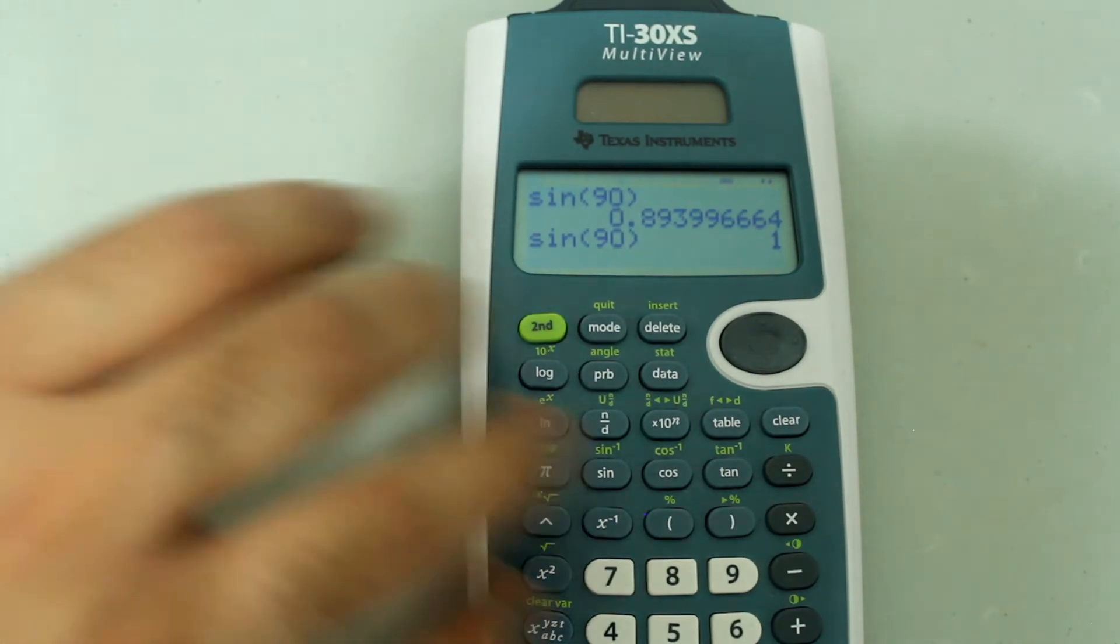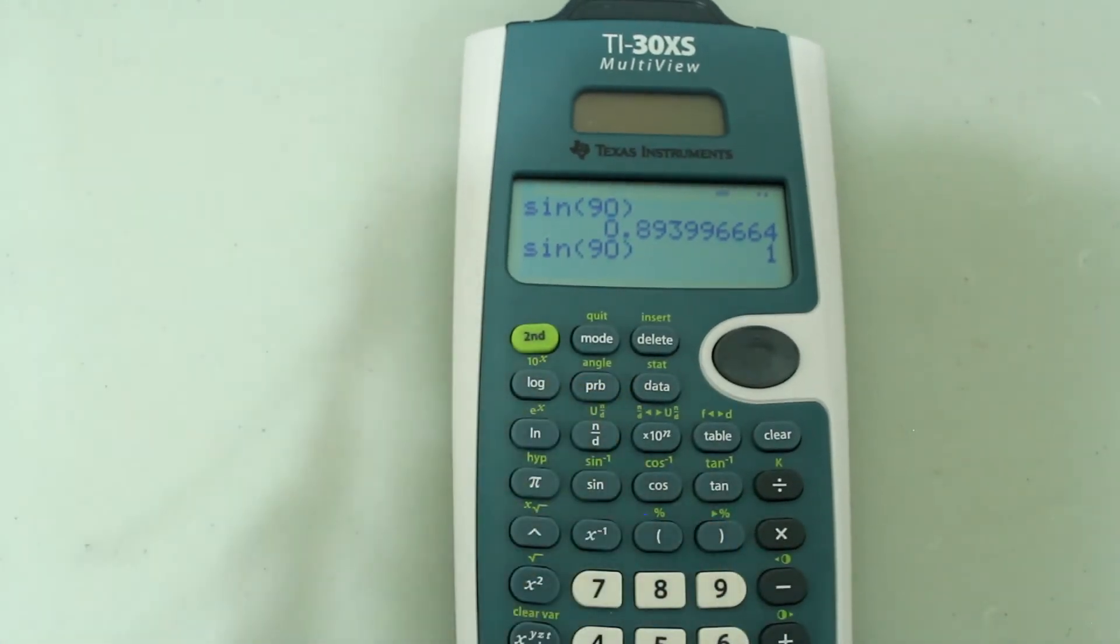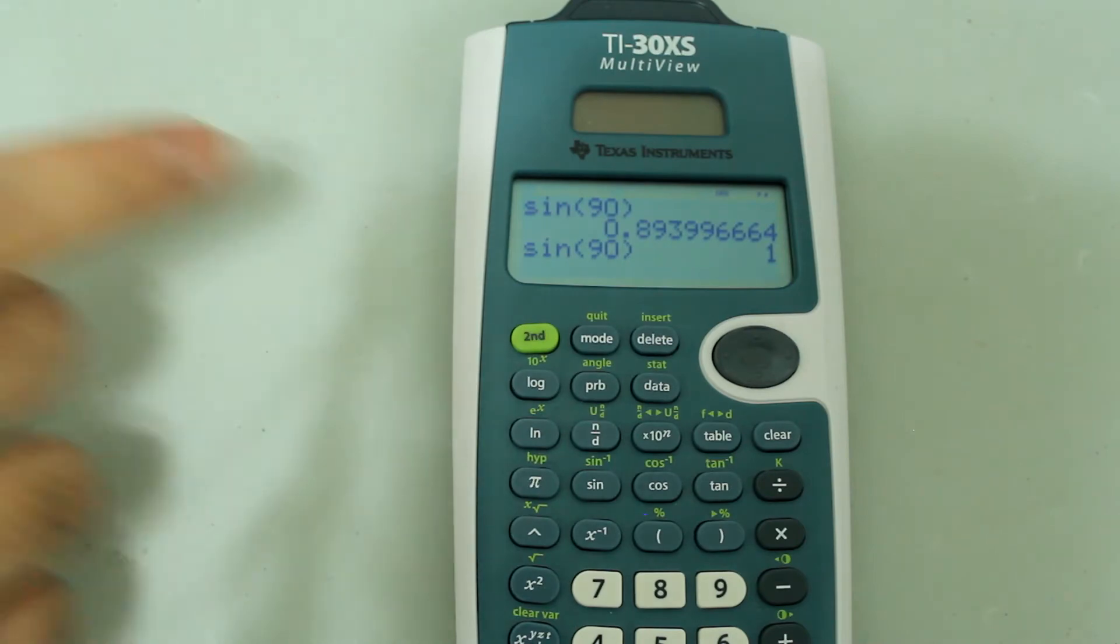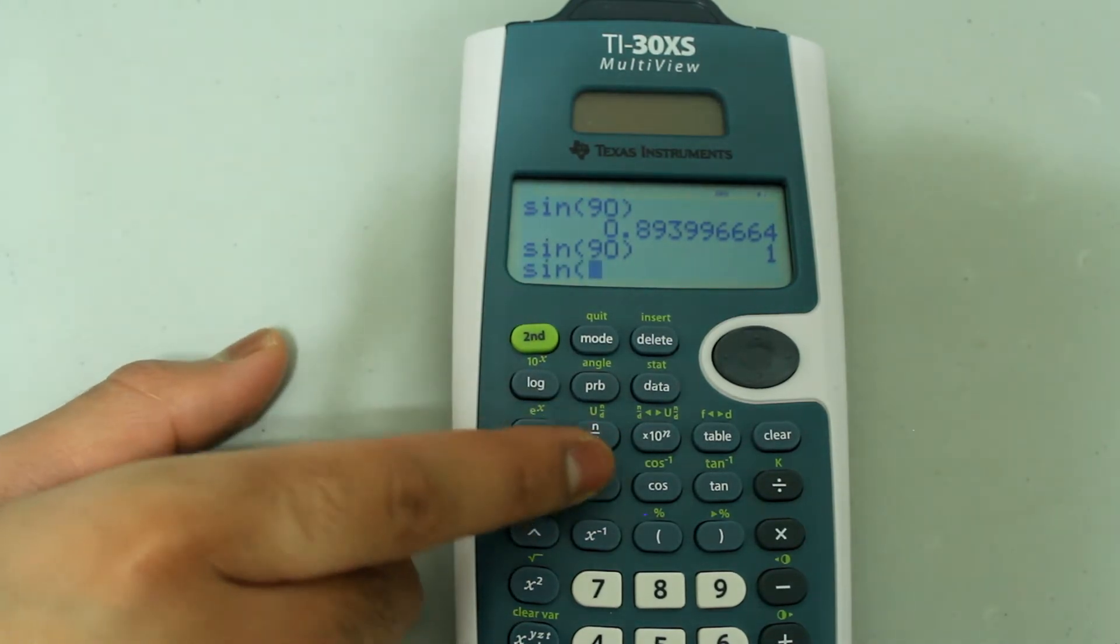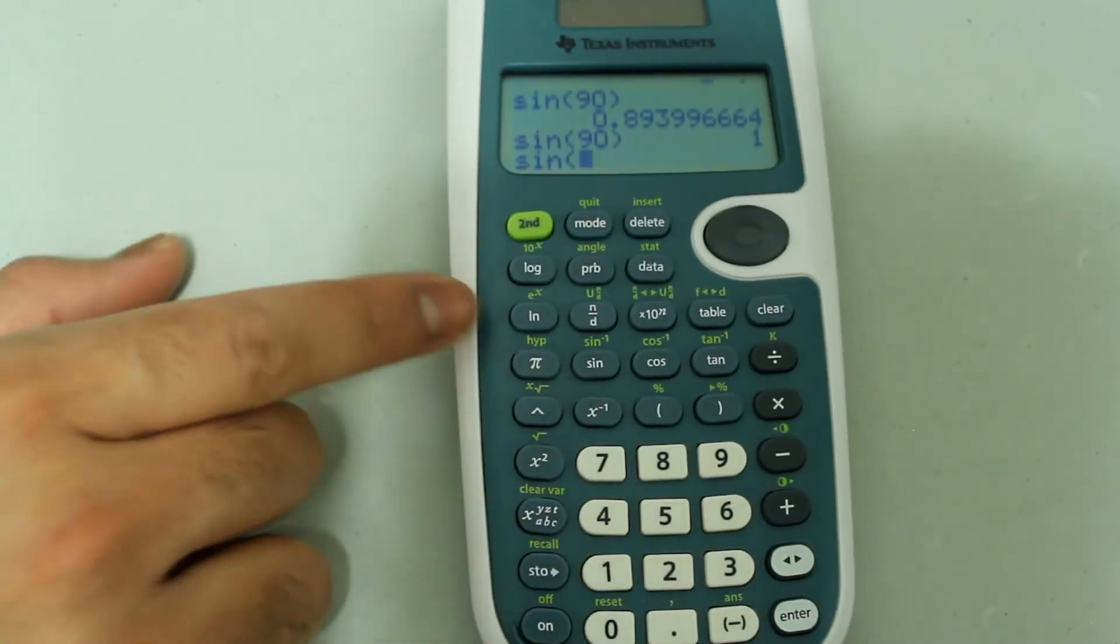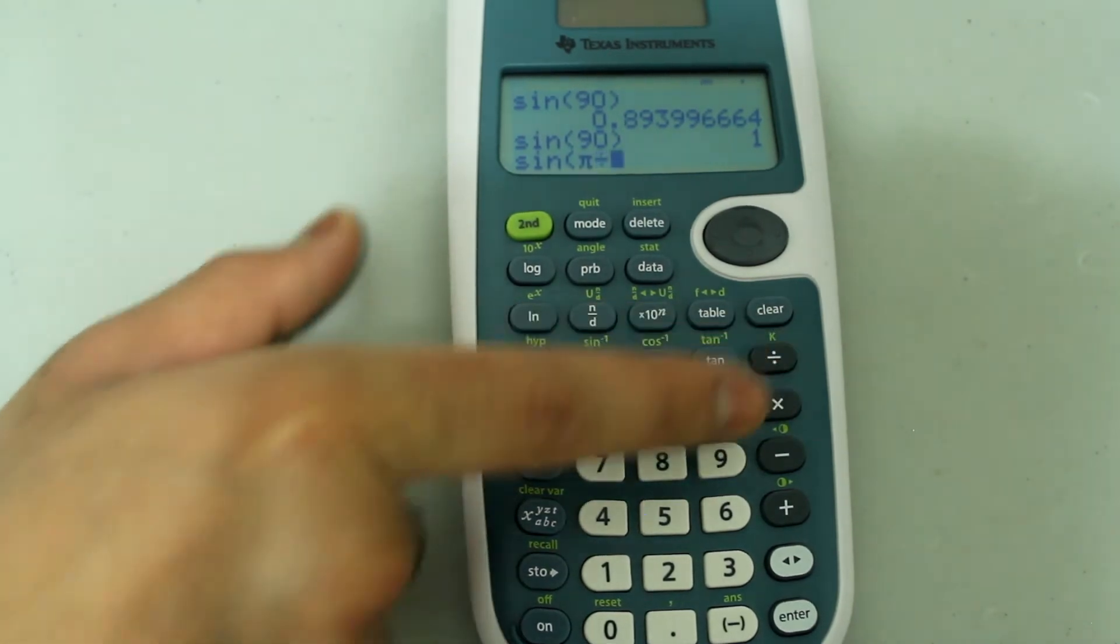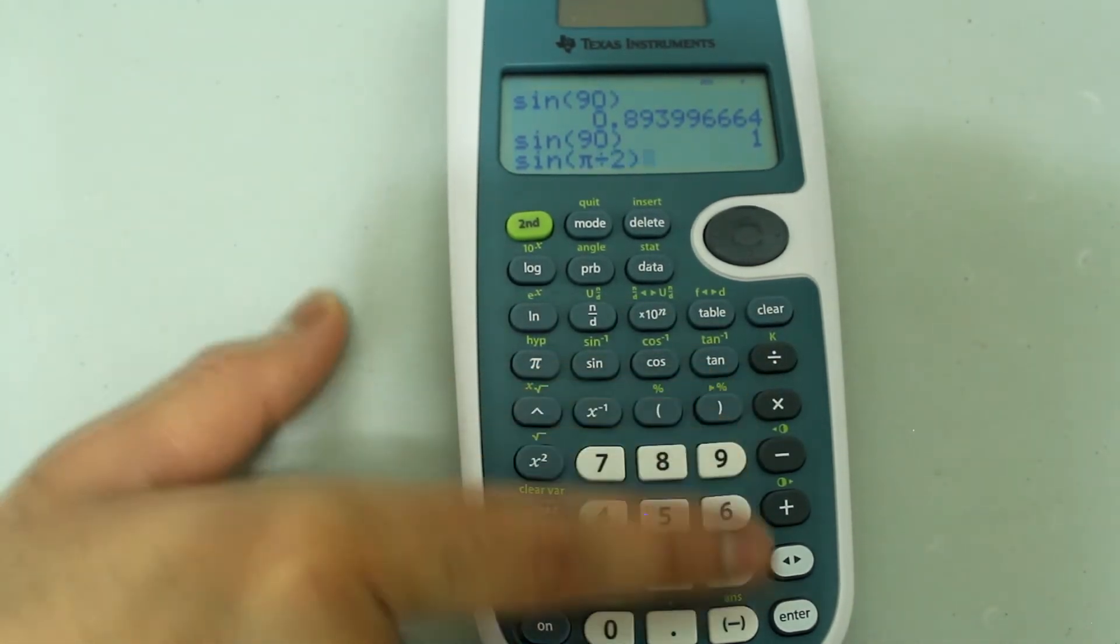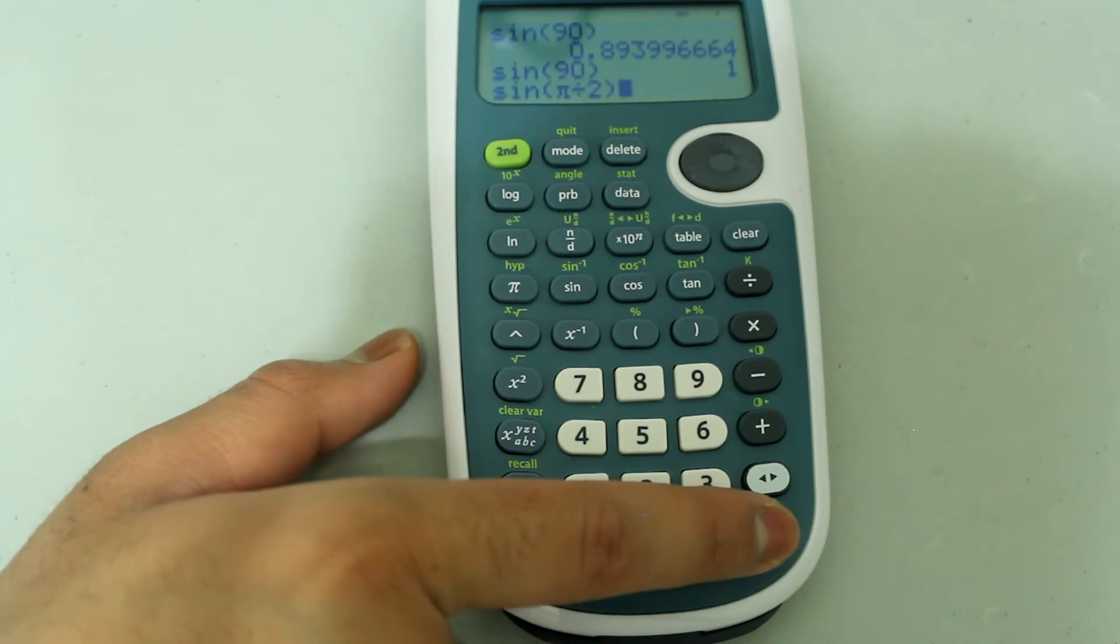A similar problem might occur if you're typing in an entry in radians while you're in degree mode. So for example, if I do sine of pi over 2 and press enter, I get this as the answer.